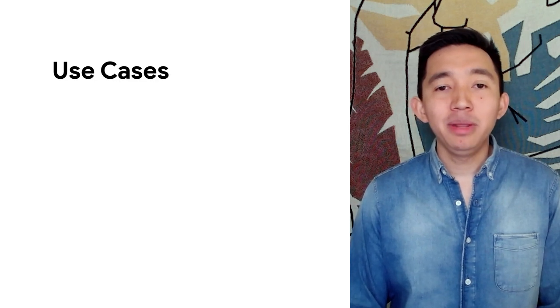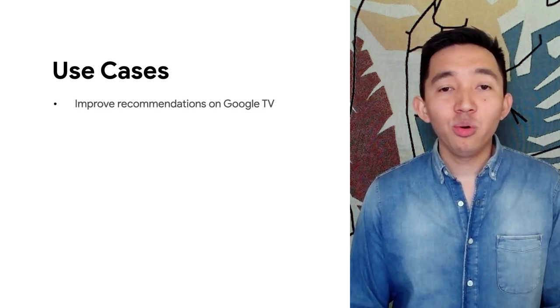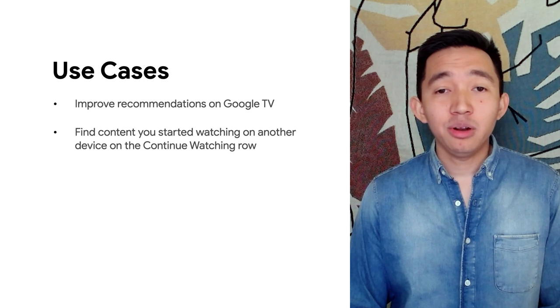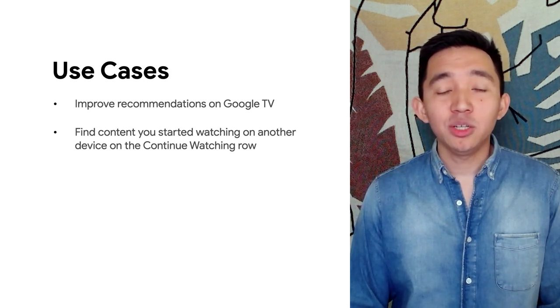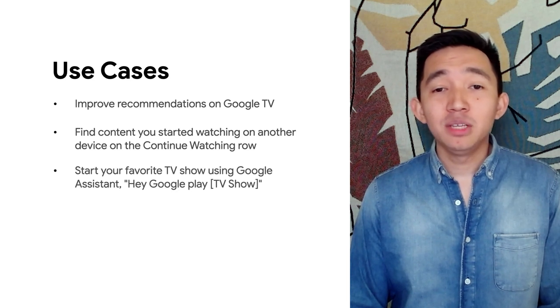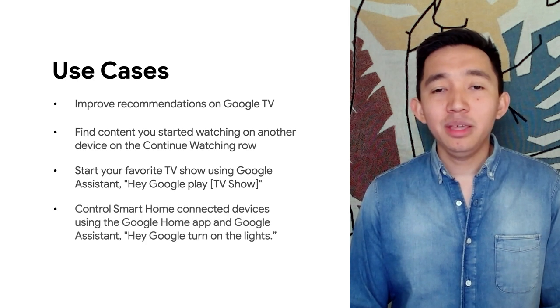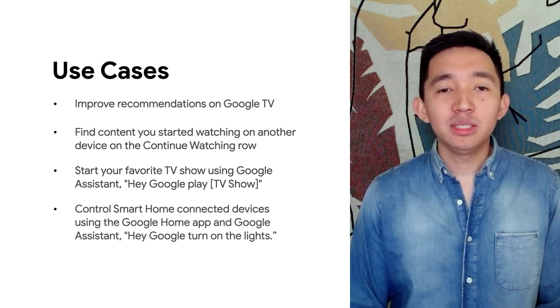Account linking is used in many places in the TV ecosystem and beyond. For example, linking your favorite video service to your Google account can improve recommendations on Google TV. You can find content you started on another device on the continue watching row on your Google TV. You can start playing your favorite TV show by telling your Google Assistant to play that show.